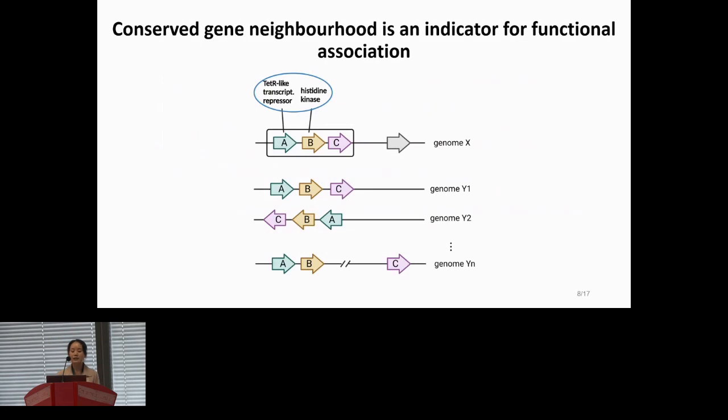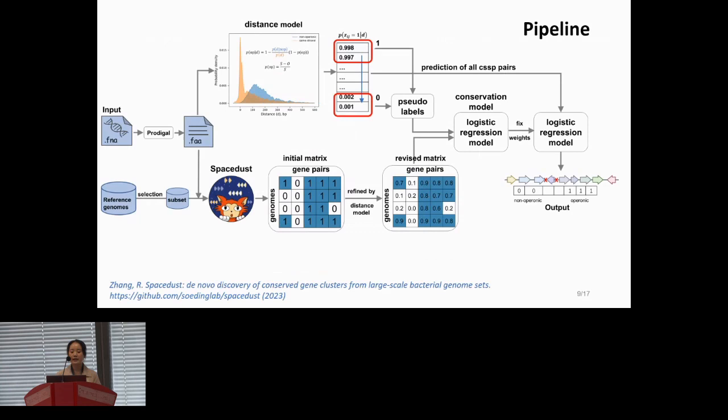The next data source is conserved neighboring genes. Maybe we already know the genes tend to rearrange relative to each other without selective pressure. Therefore, the genes that cluster together in multiple genomes are more likely to be in a similar operon. With these two informations, now we can move on to our method.